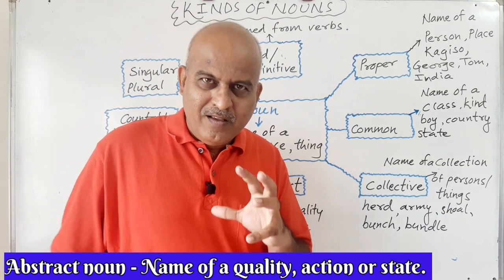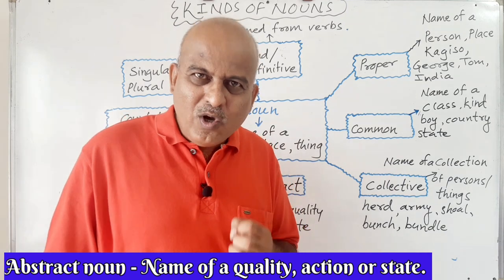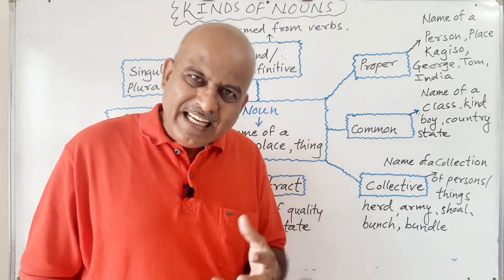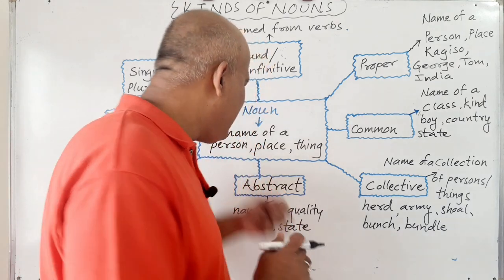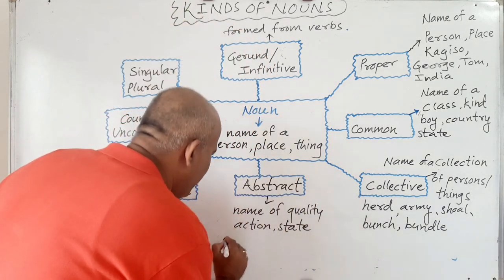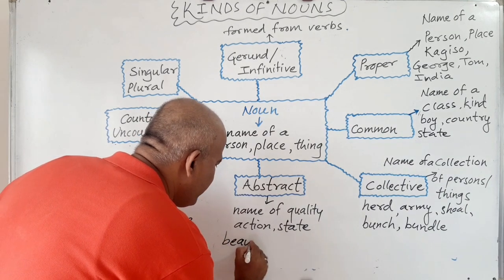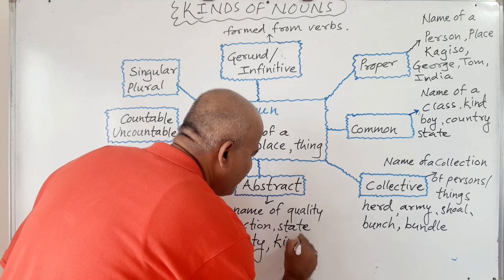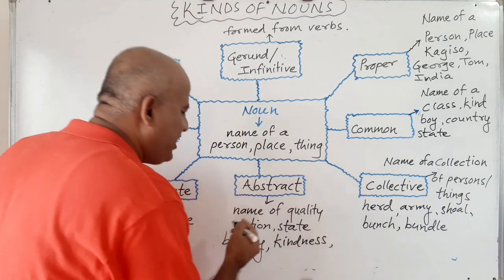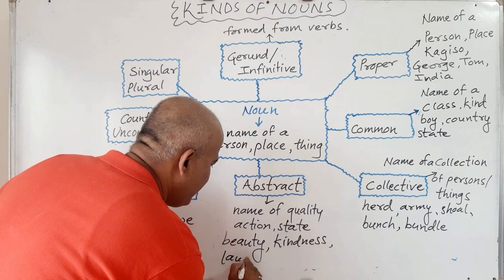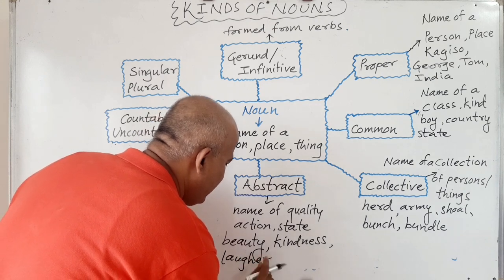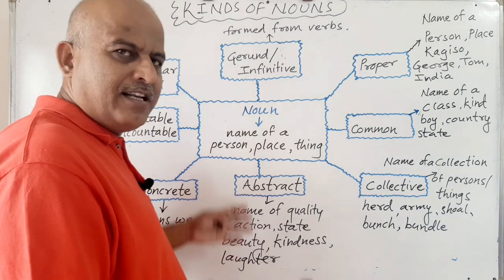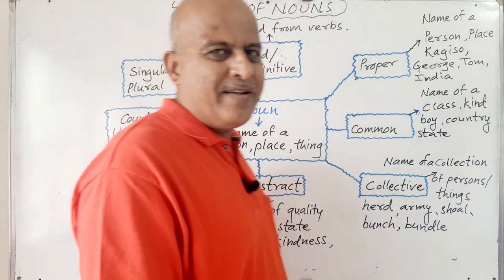For example, beauty is a quality — an abstract noun. Anger is a quality or state. Kindness is an abstract noun. Laughter is an action — also an abstract noun. These names are called abstract nouns.